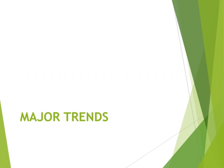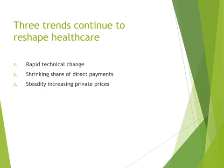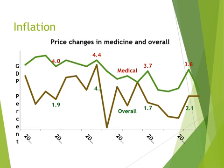Now let's look at some major trends in healthcare economics in the United States. Three trends continue to reshape healthcare: rapid technology change, which we discussed in chapter one; shrinking share of direct payments and steady increase of private prices; and inflation. Price changes in medicine overall have not moved — going from 4 to 3.8 over 15 years from 2000 to 2015 — whereas we would expect to see something more like the inflation rate going up and down. Healthcare does not do that.